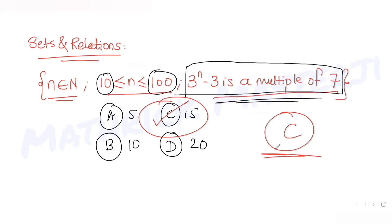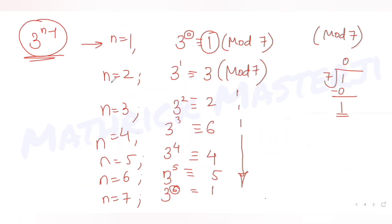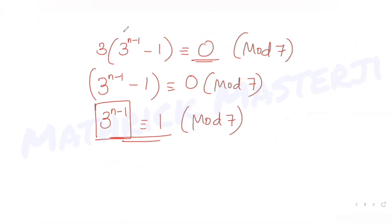I hope you understood how to solve this type of question dealing with divisibility and multiples. We used the mod concept to find powers of 3 modulo 7, got a repeating pattern, then applied it to 3^(n-1). We needed 3^(n-1) to have remainder 1 when divided by 7, which happens when n-1 is a multiple of 6.